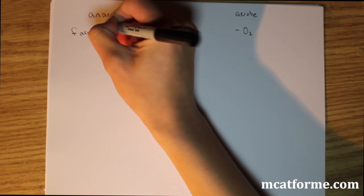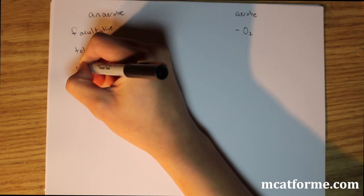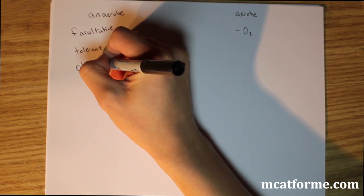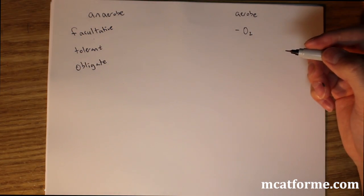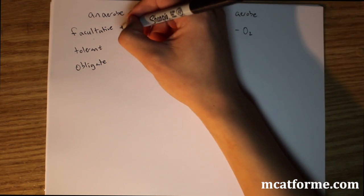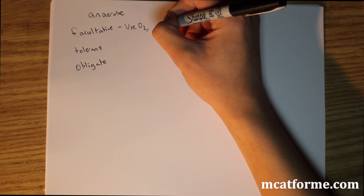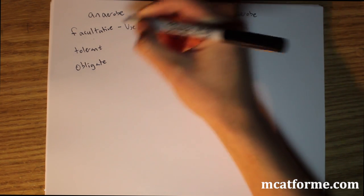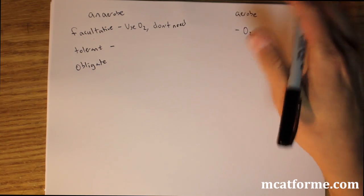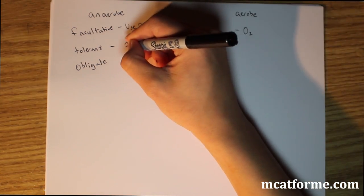So we have facultative anaerobes, we have tolerant anaerobes, and we have obligate anaerobes. So facultative pretty much means that when oxygen is present, I'll use it, but I don't need it. So they use oxygen when it's present, but they don't need it. Tolerant means I'm not going to use it if it's there, but it's not going to hurt me. So it's just whatever, just neutral.